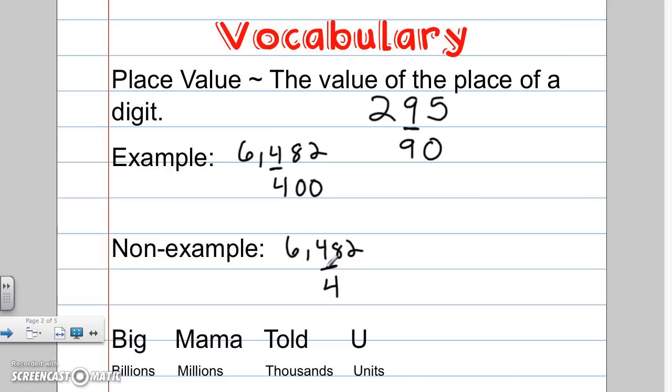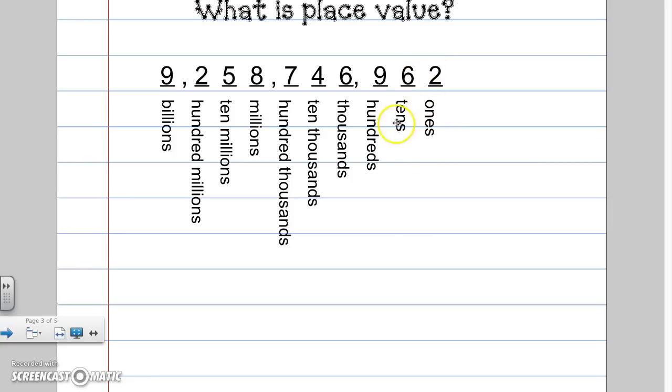For my non-example, I can use the same number or different number, and I'm going to underline the 4 and say it's just worth 4. Another way to help you remember place value is Big Mama Told You. Big Mama Told You means billions, millions, thousands, and units. We have the ones, tens, hundreds, thousands, ten thousands, hundred thousands, millions, ten millions, hundred millions, and billions.